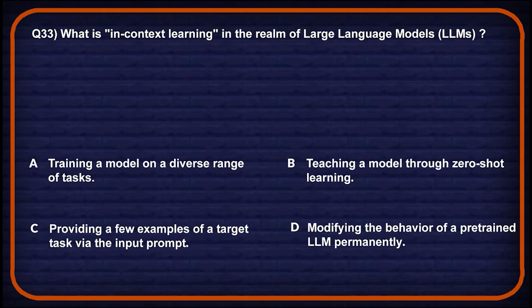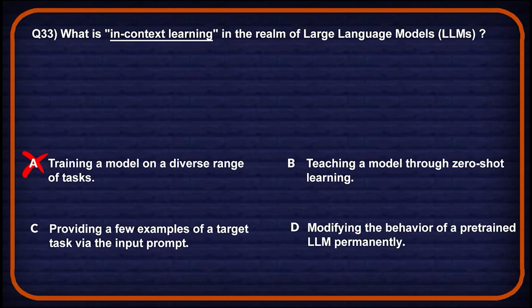Let's move on to question number 33: what is in-context learning in the realm of large language models? Option A: training a model on a diverse range of tasks — that describes pre-training, not in-context learning, so not the correct choice. Option B: teaching a model through zero-shot learning — in-context learning uses few-shot examples, not zero-shot, so wrong choice.